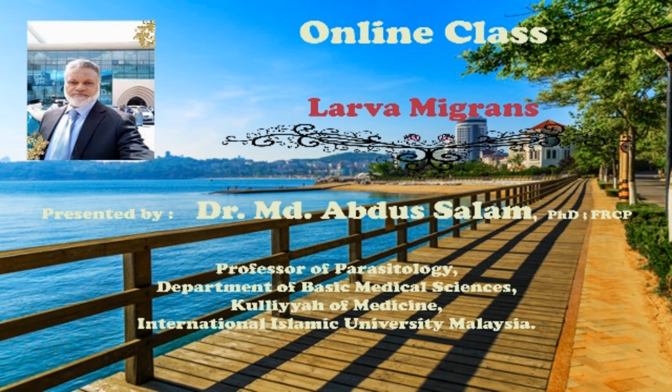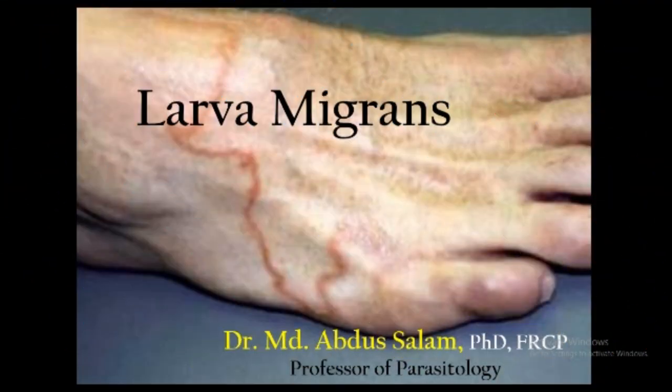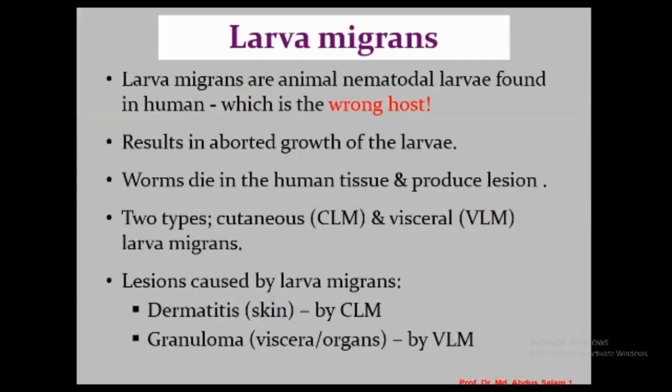Bismillahirrahmanirrahim. Assalamu alaikum wa rahmatullahi wa barakatuh. Today we discuss larva migrans, also known as wandering larva. These are basically animal nematodes which are found in the human, and the human is considered a wrong host. That is why the larva in the human cannot be developed to adult, and the larva actually results in aborted growth, eventually dying and producing clinical manifestations in the human.